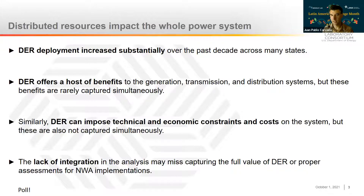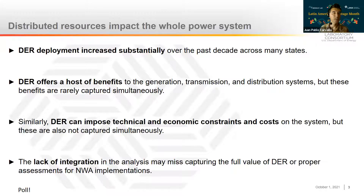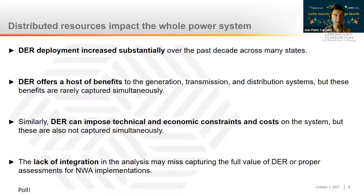I'm going to stop here for one second and move into a poll just to keep us engaged — more like a trivia kind of poll. Let's see about your knowledge of distributed solar in the U.S. How much distributed solar PV had been installed in the U.S. by July of this year, according to the U.S. Energy Information Administration? You have five options. Let's see how much you're tracking adoption of solar PV in this country.